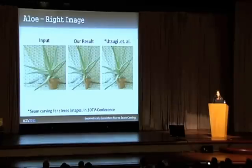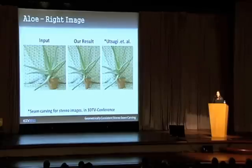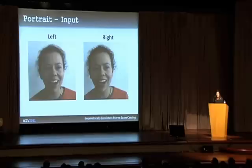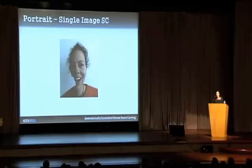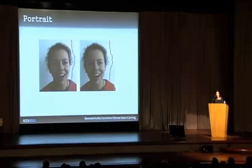For comparison, the only prior attempt to consider stereo images was by Utsagi et al., presented at the 3DTV conference. However, preserving geometry was not defined or obtained by their method. Comparing right image results, their results are clearly distorted. In our portrait example, the challenge is that the salient object contains a homogeneous region, which single image seam carving would prefer to remove. Since our method has an additional depth cue, we can overcome this and preserve the salient object.